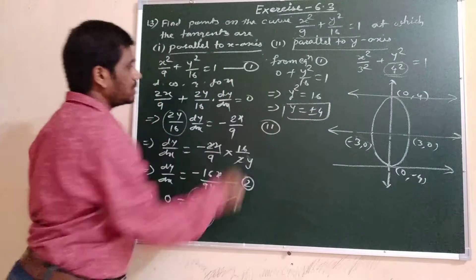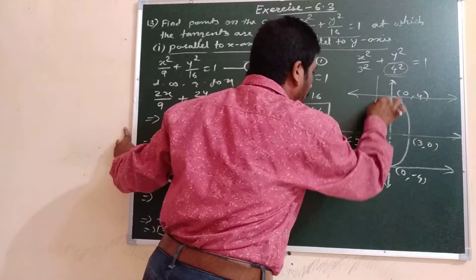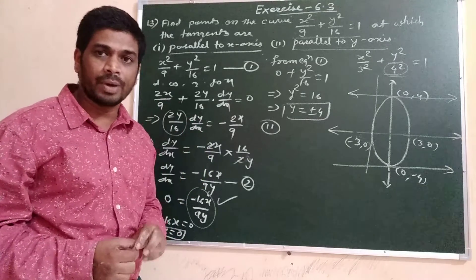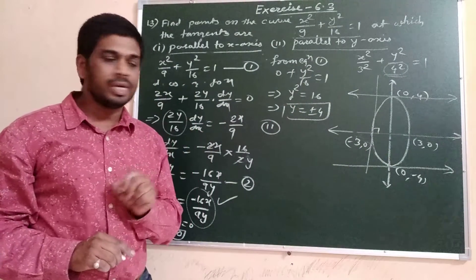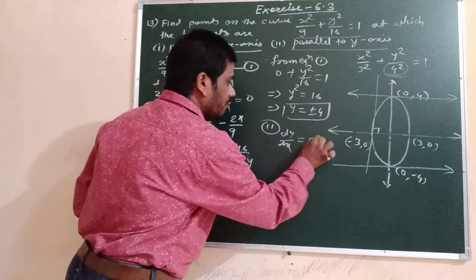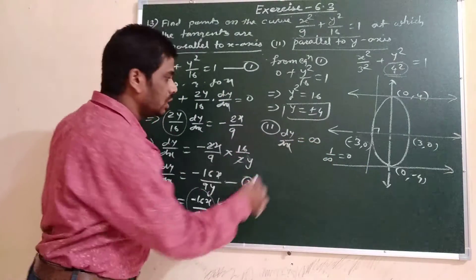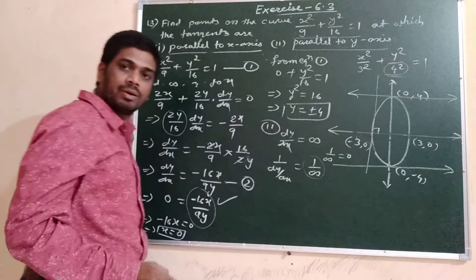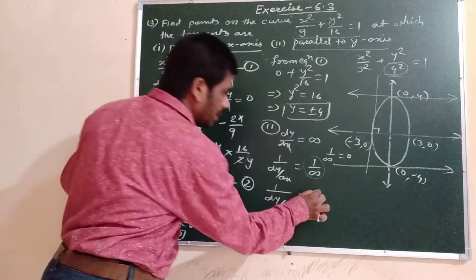For the second part, the tangent is parallel to the y-axis, which means it is perpendicular to the x-axis. This means the slope of the tangent is infinity, because tan(90°) is infinity. Since dy/dx = infinity, we have 1/(dy/dx) = 1/∞ = 0, so dx/dy = 0.